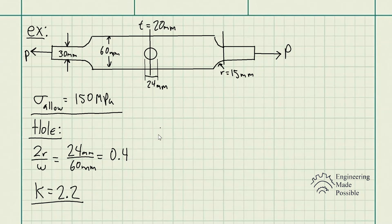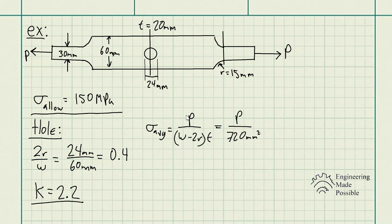The average stress is computed from the cross-sectional area. You take the rectangular cross-section and subtract the area removed by the hole. Plugging in the values, we get P divided by 720 square millimeters for the net cross-sectional area, where P is the unknown external load we are trying to solve for.